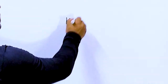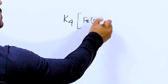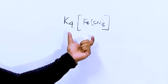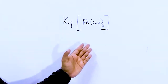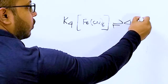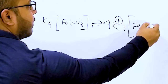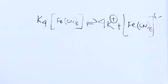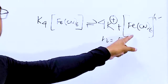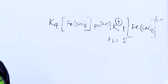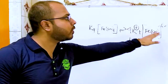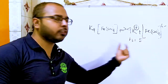Say for example, if this is K4[Fe(CN)6] — this is known as a complex salt. Why is it complex in nature? Because when it gets dissociated, it will give you 4K⁺ and [Fe(CN)6]⁴⁻, so n equals 5 here — number of ions equals 5.